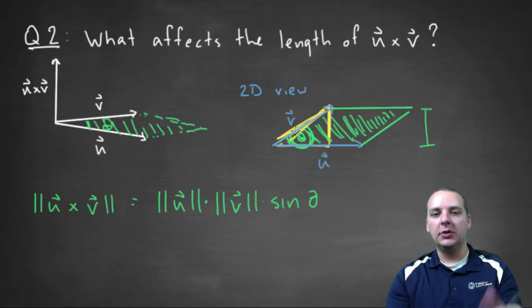So you can find that vertical distance by the magnitude of v, times the sine of theta. So commit this guy to memory, this is how long the cross product is.